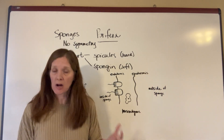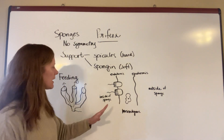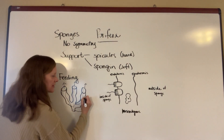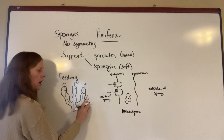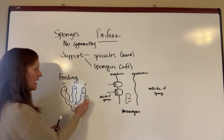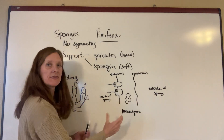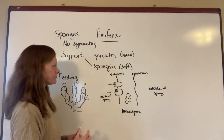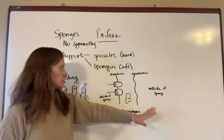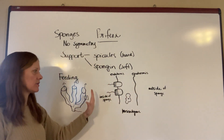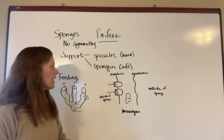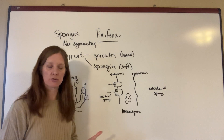Even though a sponge may look like a plant, it is very much an animal. If I take a picture of the side of the sponge, the inside of it is hollow. The wall of the sponge has two layers: you have an epidermis on the outside and an endodermis on the inside. In between is a layer called the mesenchyme. The endodermis is made up of a lot of collar cells.